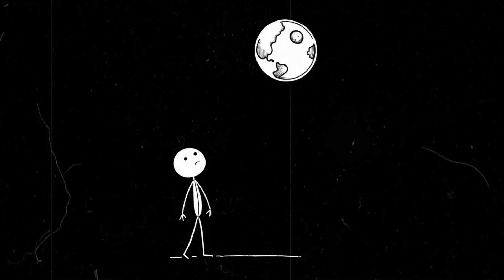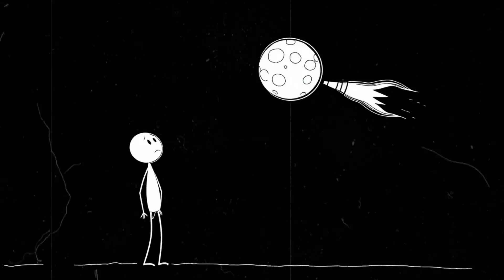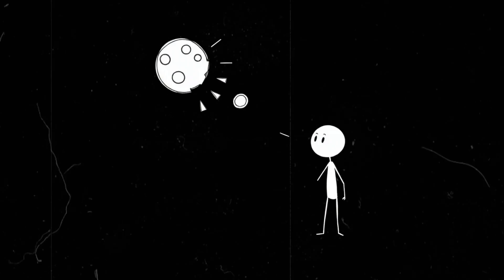But what if something forced the moon closer? Maybe a rogue planet swings by and nudges it inward. Or some insane future civilization decides to attach giant rocket engines to the moon and drag it toward Earth. Either way, if the moon crosses a certain point, called the Roche limit, Earth's gravity would rip it apart.